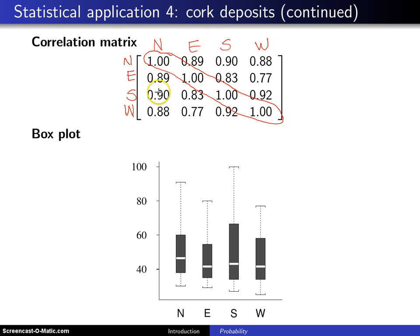The more interesting numbers are the off-diagonal entries. For example, there is a positive sample correlation between the cork deposits on the north and the south side of the trees — that is what this 0.9 tells you. It appears here, and since this is a symmetric matrix, it also appears in the corresponding position. All of the values in a sample correlation matrix are going to fall between negative one and positive one, inclusive.